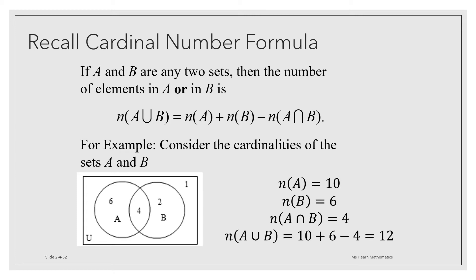would be the number in A, 10, plus the number in B, 6. But that would be over counting the overlap 4, so we have to subtract off that 4 and we would get 12, which makes sense because 6 plus 4 plus 2 is 12.